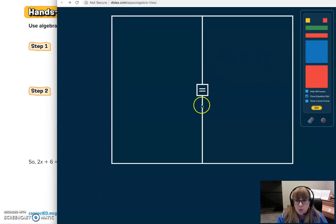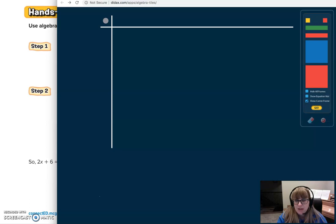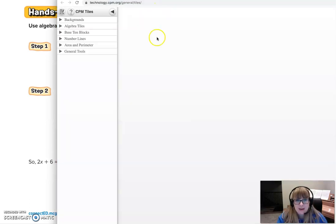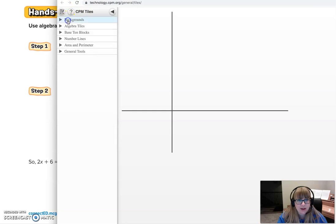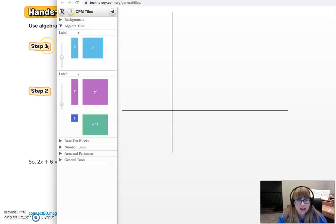If you're using this setup here, this is the Didax website. The first thing you want to do, this is an equation mat, and I don't want an equation mat. I actually want a corner frame. So I'm going to switch it to corner frame and click go, and then start pulling those tiles out.